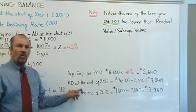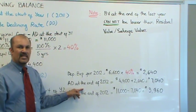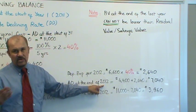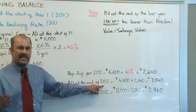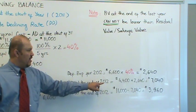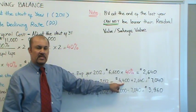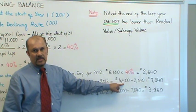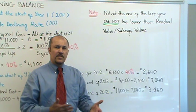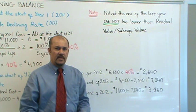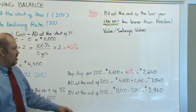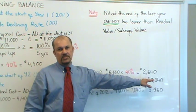Now, what is your accumulated depreciation at the end of 2012, at the end of year two? Your AD at the end of 2012 is your depreciation expense for 2011 plus your depreciation expense for 2012. So combining the two years of depreciation expenses, you end up with your accumulated depreciation at the end of 2012, which is $7,040.